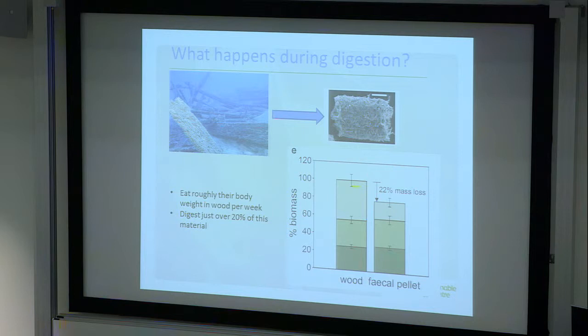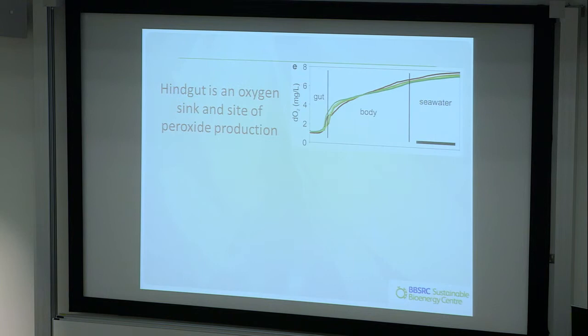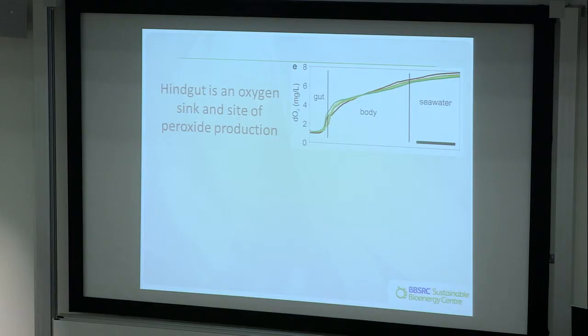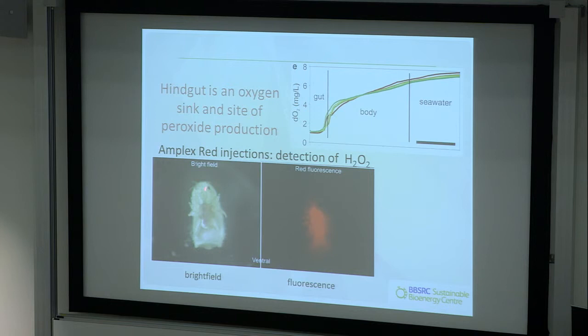What we've been focusing on in the last couple of years is how does this digestive system work. Here's some ship timbers being eaten by gribble. That's what's eating away most of what you can see here. They get through a lot of wood—roughly their own body weight every week—and they digest about 20% of that material. This is a fecal pellet being produced by the gribble. One thing we've observed is the hindgut is an oxygen sink. Most digestive systems tend to be oxygen sinks because there's a lot of microbial life in there that burns up the oxygen. In this case, we know there's no microbes in that hindgut, so it wasn't obvious why it should have such low oxygen tension.